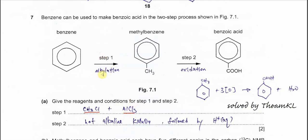Step one is called alkylation, and the name of the mechanism is electrophilic substitution. After methylbenzene is formed, from figure 7.1 it is quite clear that the methyl group is now changed to COOH. Because hydrogen is removed and oxygen is added, this is clearly about oxidation.